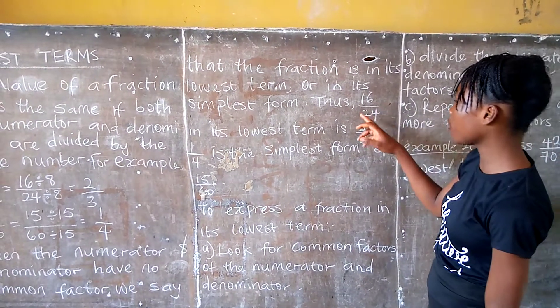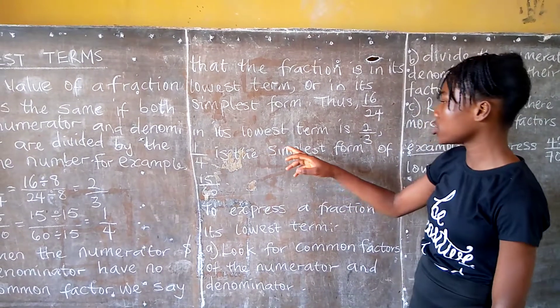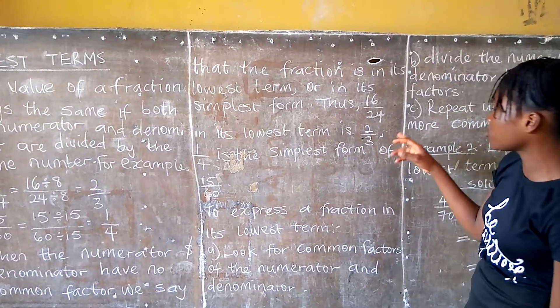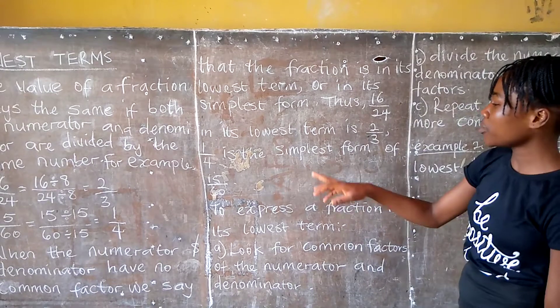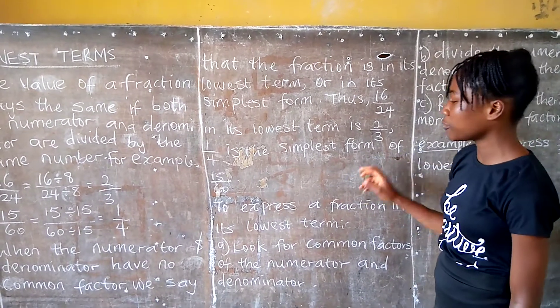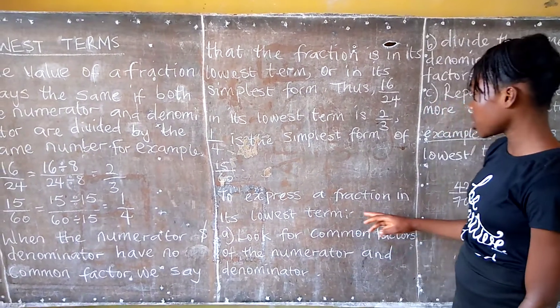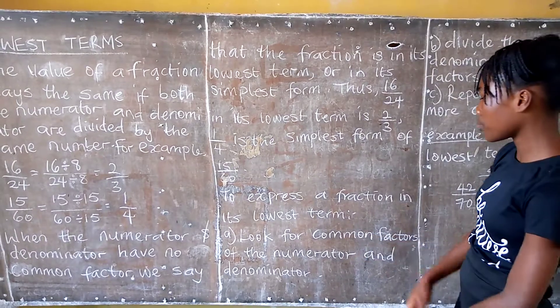Thus, 16 over 24 in its lowest terms is 2 over 3, and 1 over 4 is the simplest form of 15 over 60. So to express a fraction in its lowest terms: